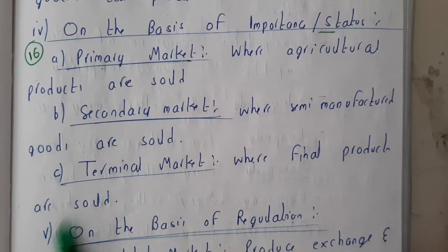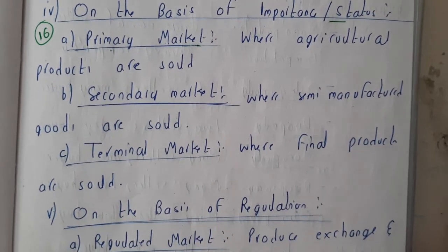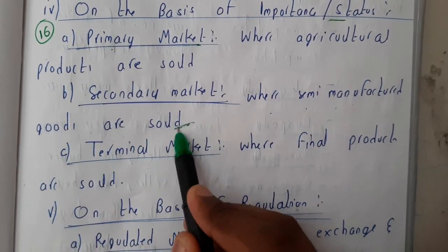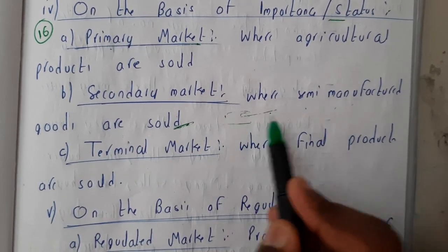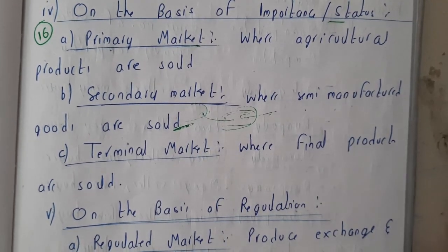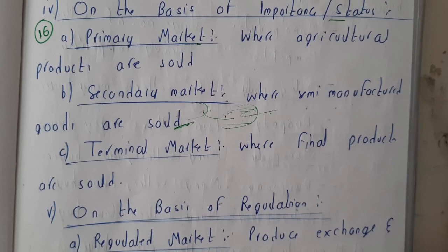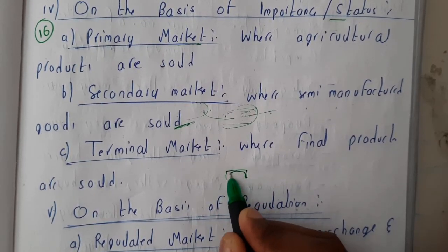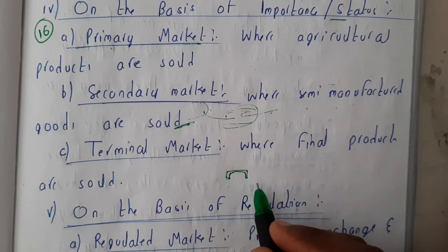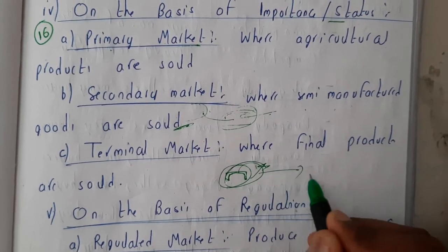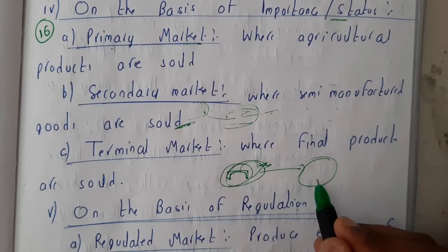Similarly, secondary market is where semi-manufactured goods are sold — half manufactured goods. These half manufactured goods will be transferred to some other company and that company will form the finished goods. The best example is bottle caps. Bottle caps are semi-finished because they are not yet fitted to any bottle, so those belong to semi-finished goods.